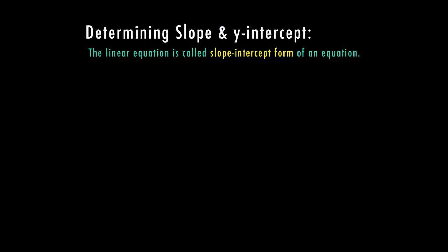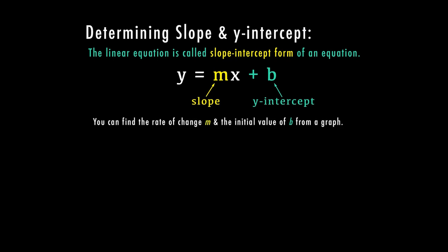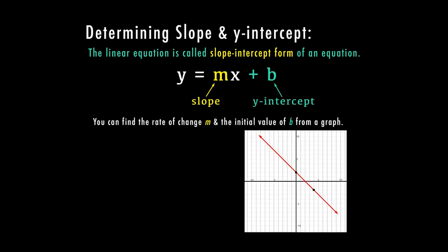This linear equation is called slope intercept form of an equation. So my formula is y equals mx plus b, m is my slope, b is my y-intercept. You can find the rate of change m and the initial value of b from a graph. So here we have a graph, we're going to figure out our y-intercept and our slope so that we can fill out our formula.